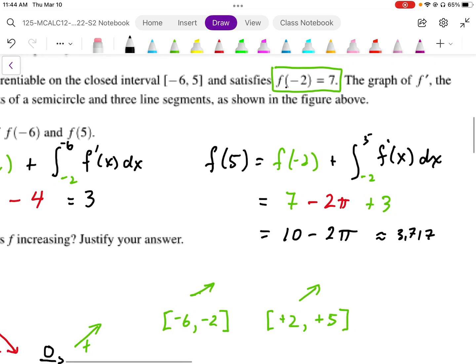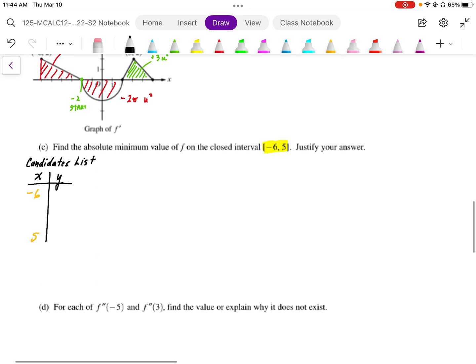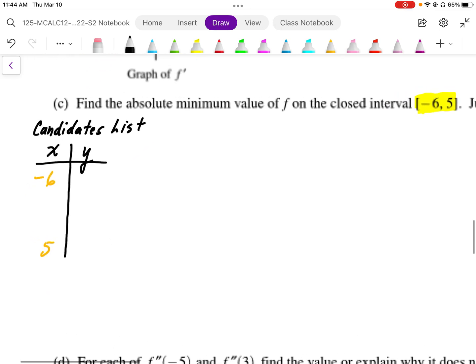And the other endpoint, 10 minus 2π, works out to be 3.717 approximately. I'm going to put those in my table. So at the endpoint negative 6, it was 3, and this is 3.717 approximately.